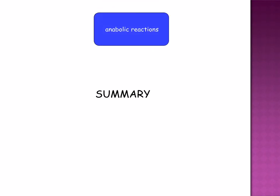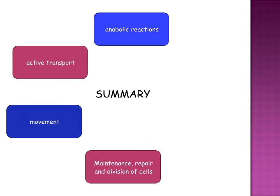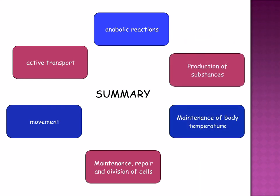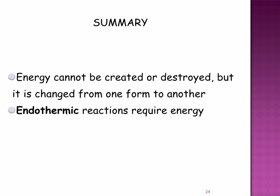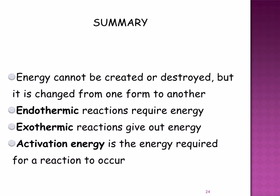So what have we learned in this lesson? We've looked at the different processes that require energy — anabolic reactions, active transport, movement, maintenance, repair and division of cells, maintenance of body temperature, and the production of substances. We looked at how energy cannot be created or destroyed, but is changed from one form to another. Endothermic reactions require energy, exothermic reactions give out energy, and activation energy is required for a reaction to occur.